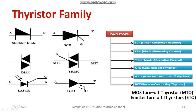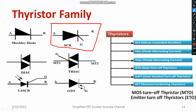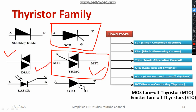Let us discuss the different members of the Thyristor family. Silicon Controlled Rectifier (SCR) is a very important member, having anode, cathode, and gate terminals. If you connect two SCRs in anti-parallel, the resulting device is called TRIAC. TRIAC is nothing but an anti-parallel or inverse-parallel connection of two SCRs. TRIAC is helpful for bi-directional control, whereas SCR is a unidirectional control device. If you connect two power diodes in anti-parallel, you get DIAC — diode for alternating current. TRIAC stands for triode for alternating current.